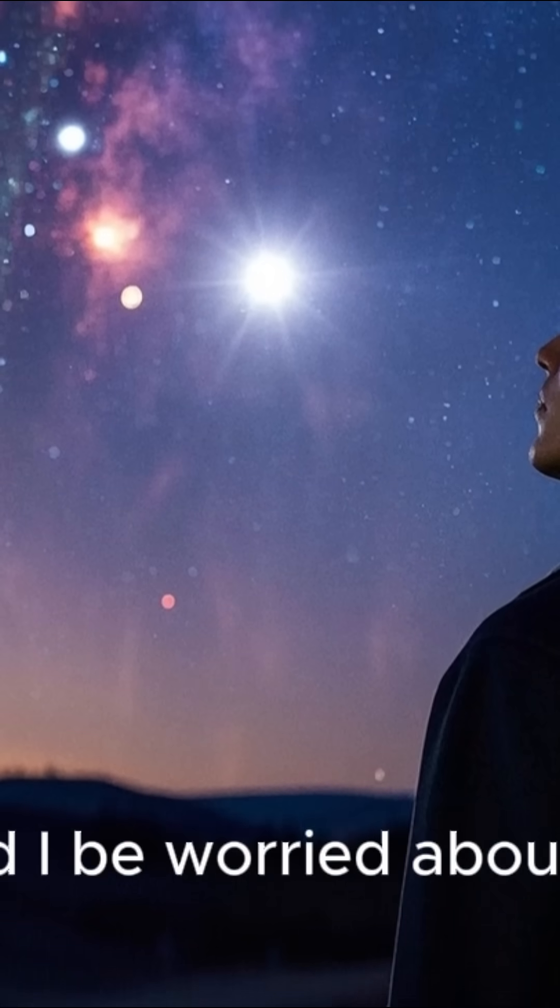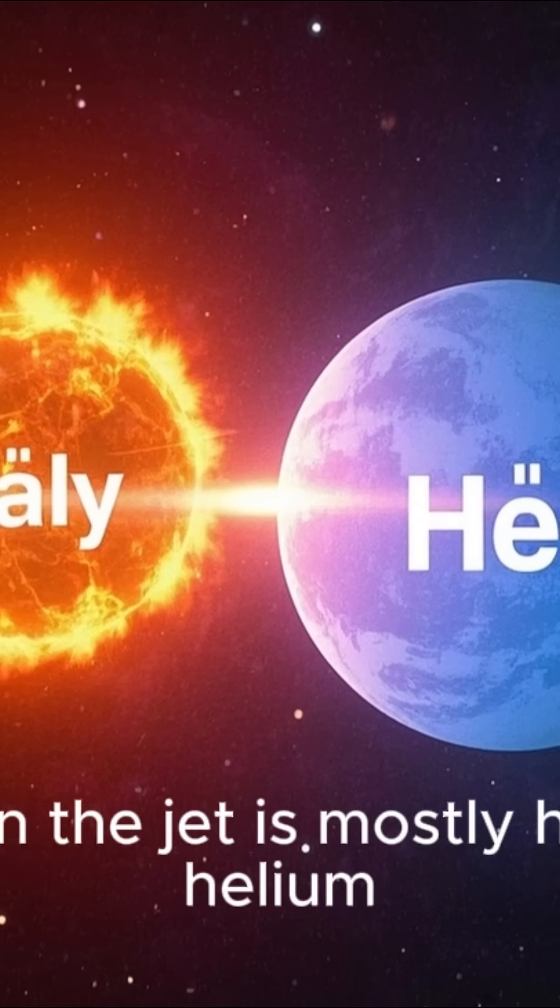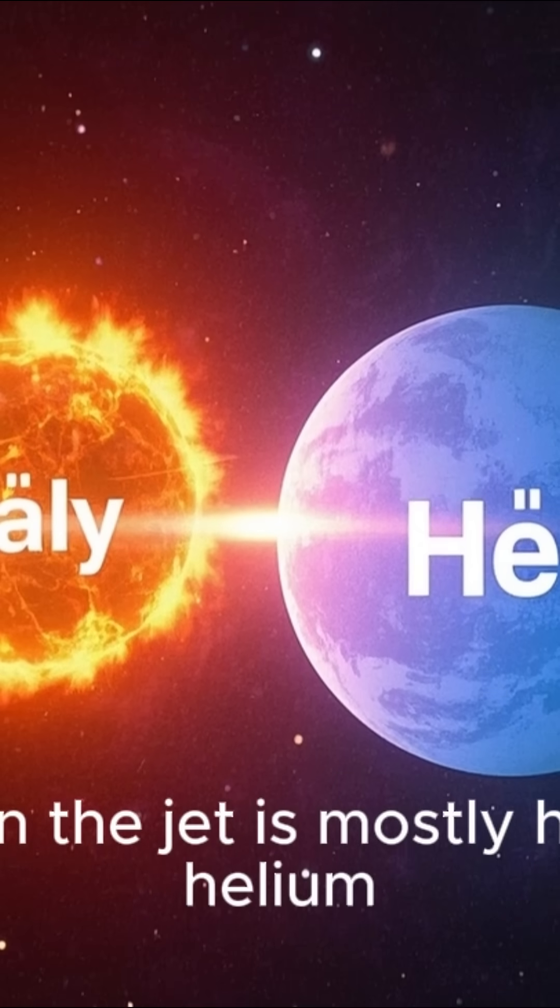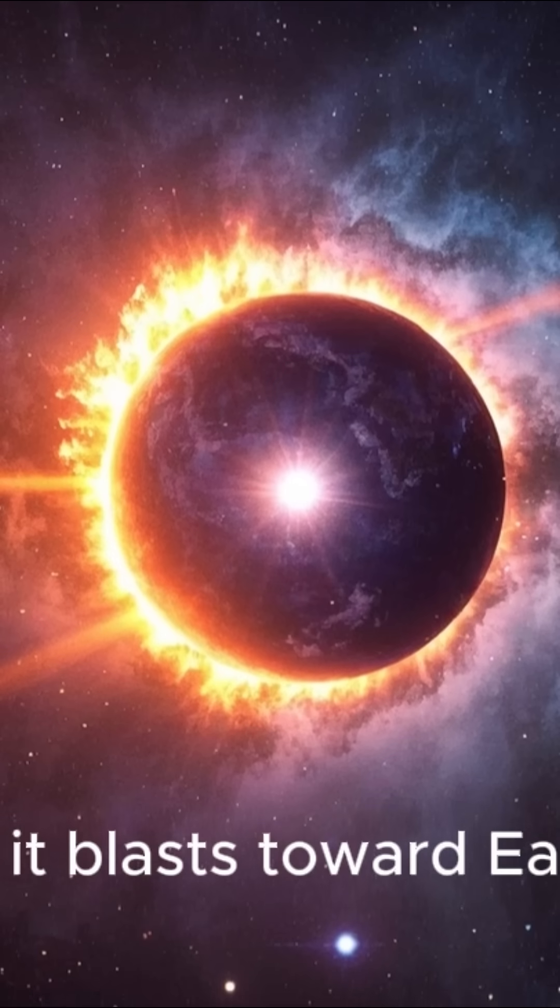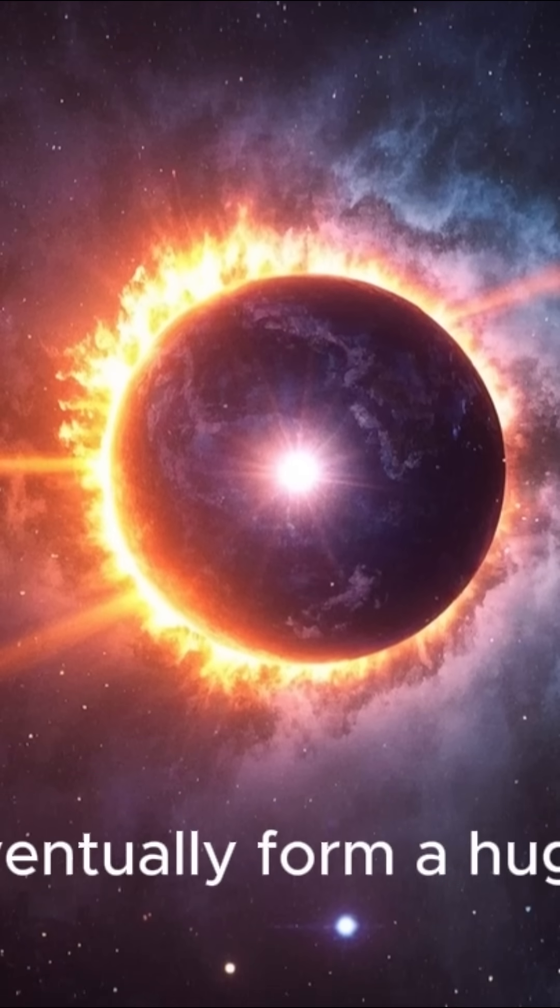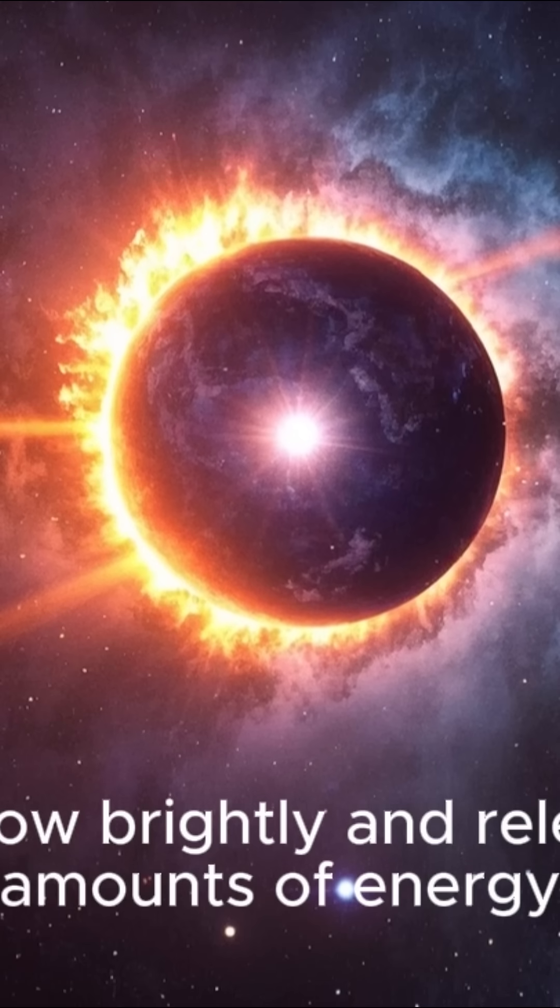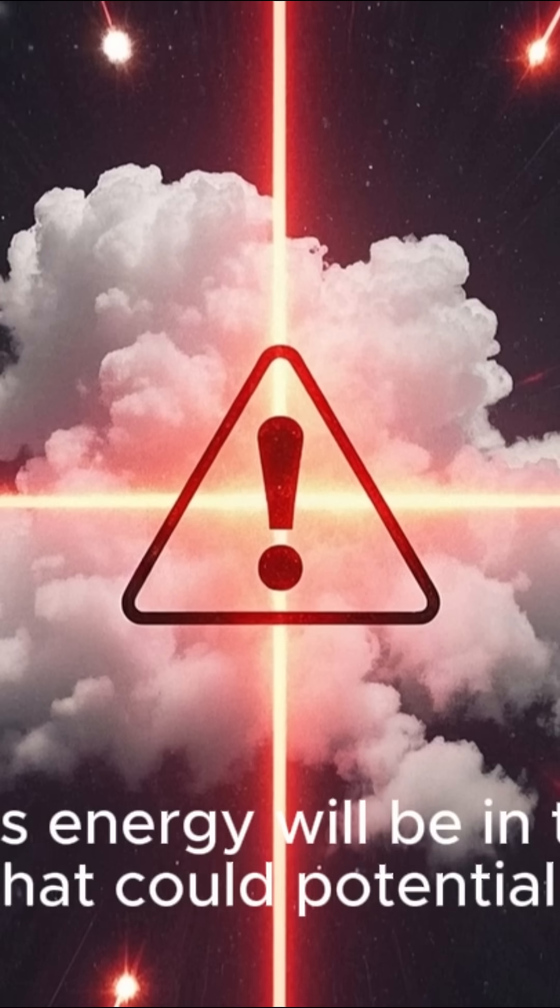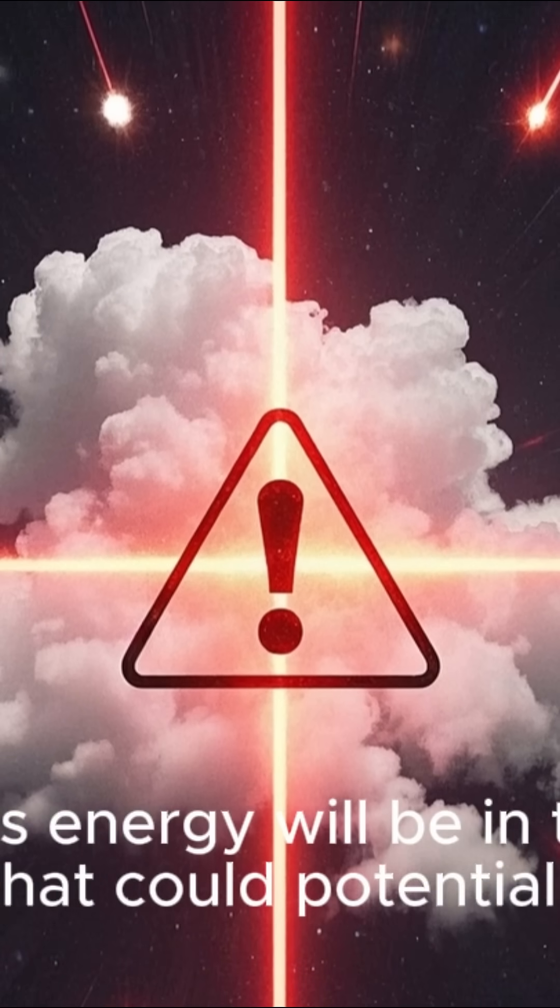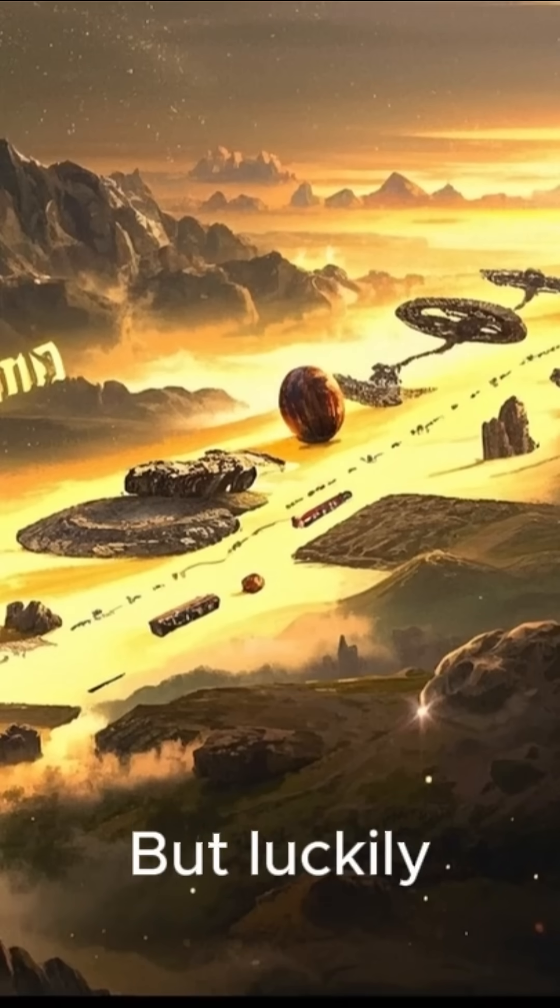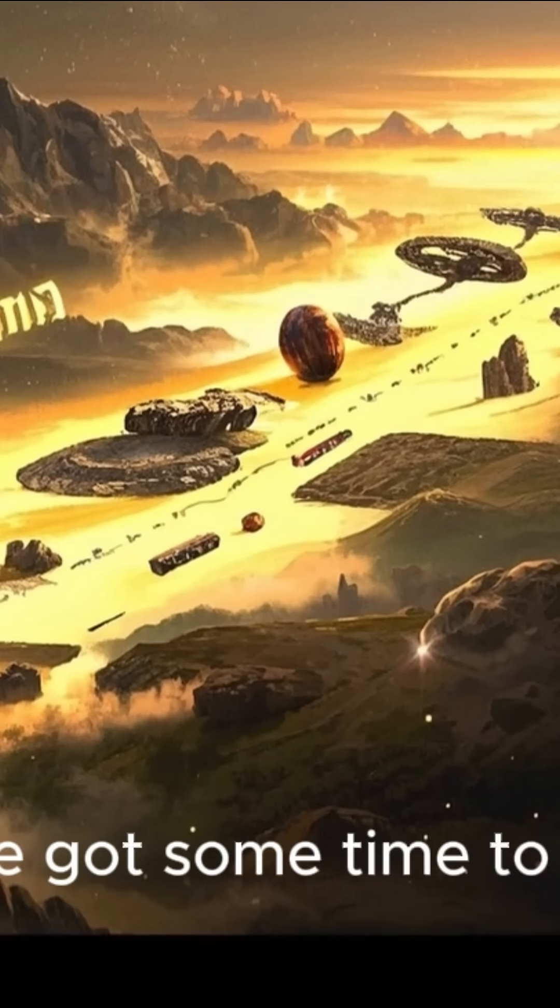Now you may be wondering, should I be worried about this? And the answer is probably not. The material in the jet is mostly hydrogen and helium, which is pretty much the same stuff that's in our sun. As it blasts toward Earth, it will eventually form a huge cloud that will glow brightly and release huge amounts of energy. Some of this energy will be in the form of radiation that could potentially harm us. But luckily, this won't happen for another 200 million years. So we've got some time to prepare.